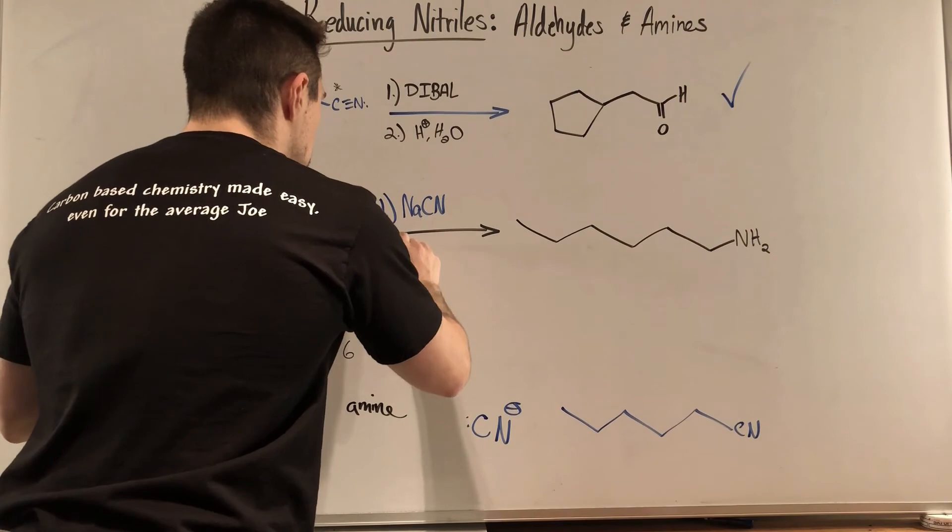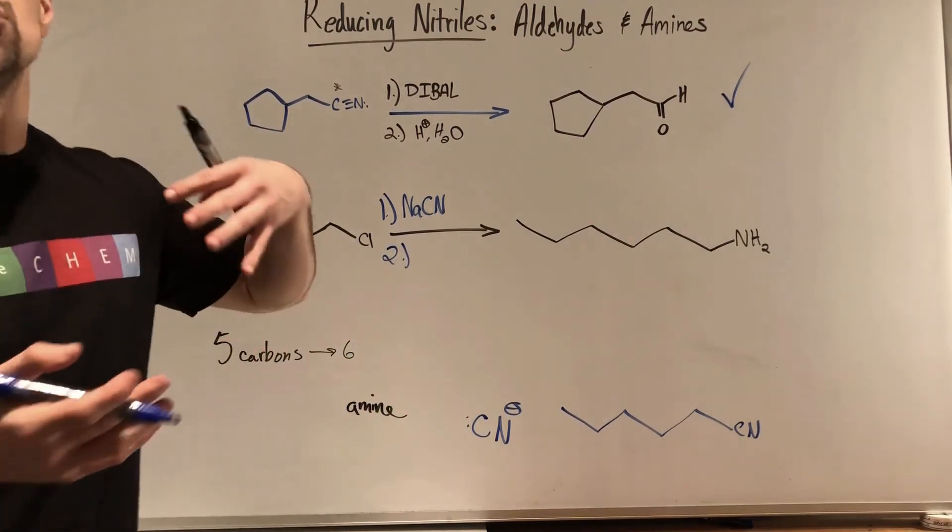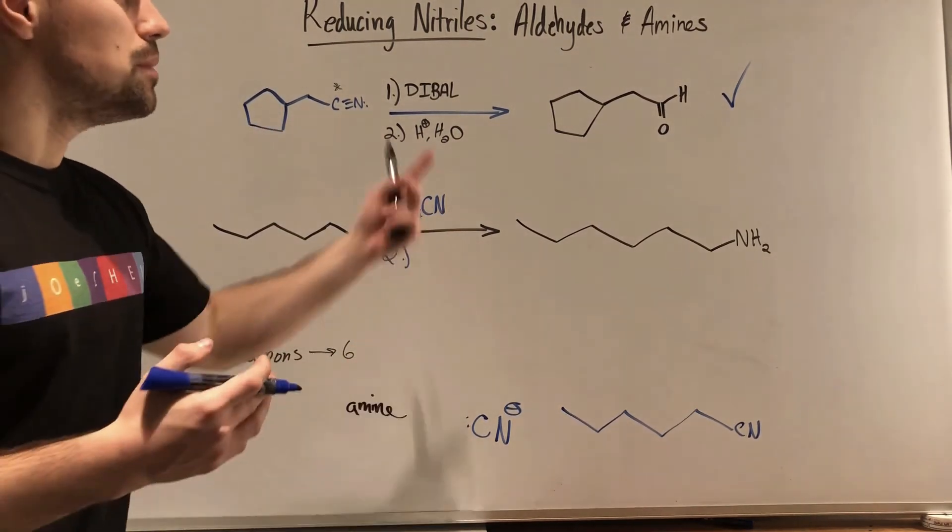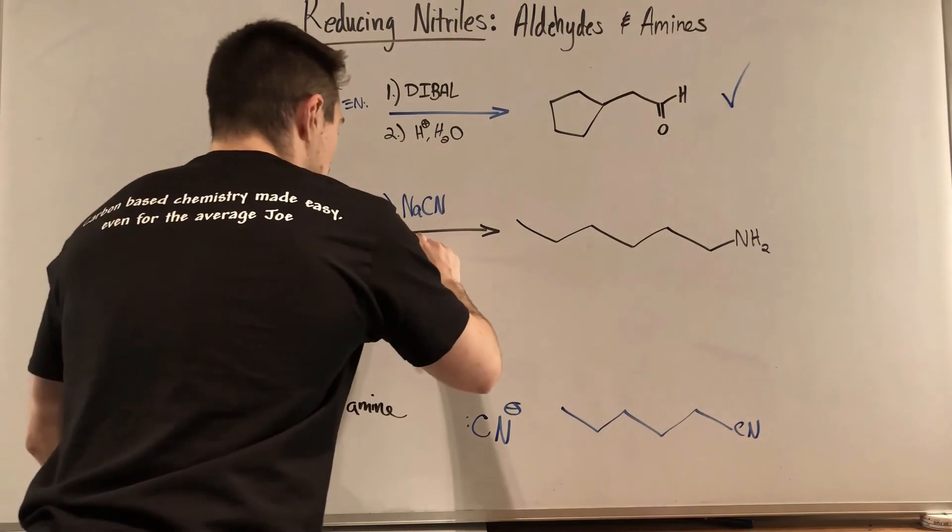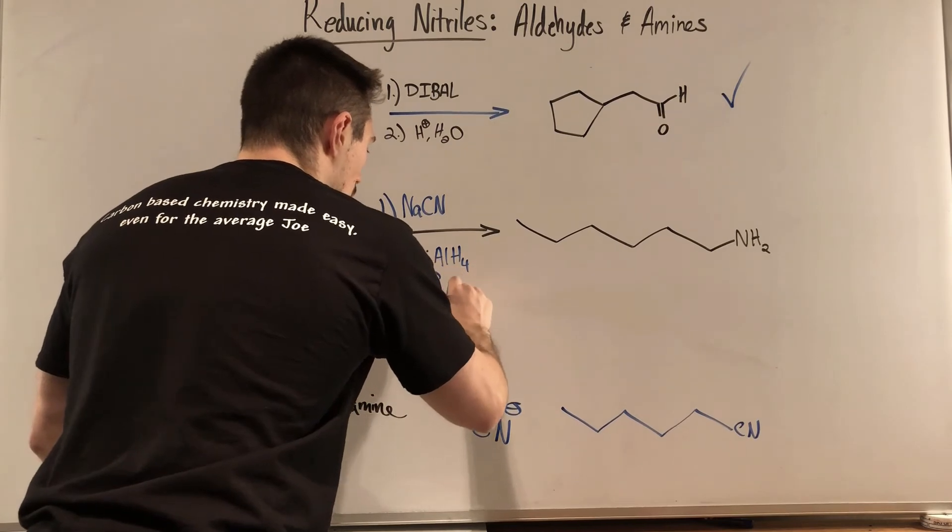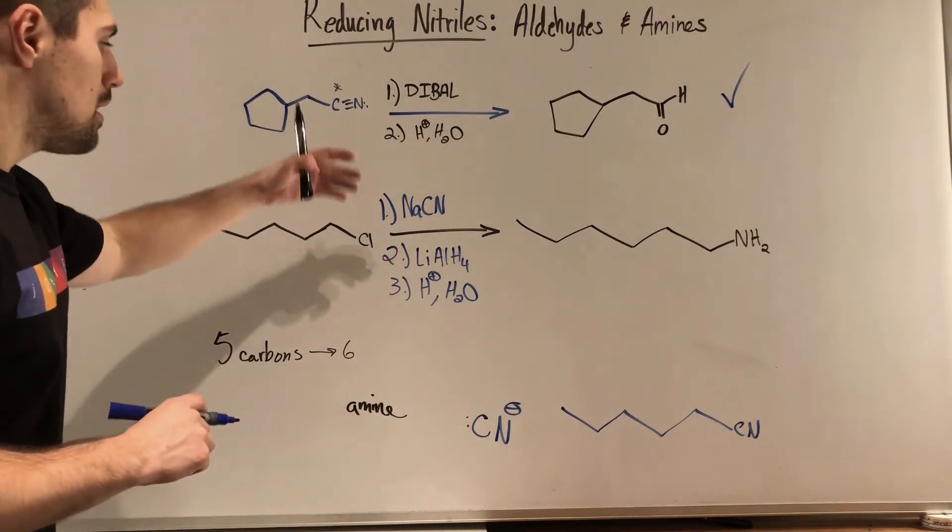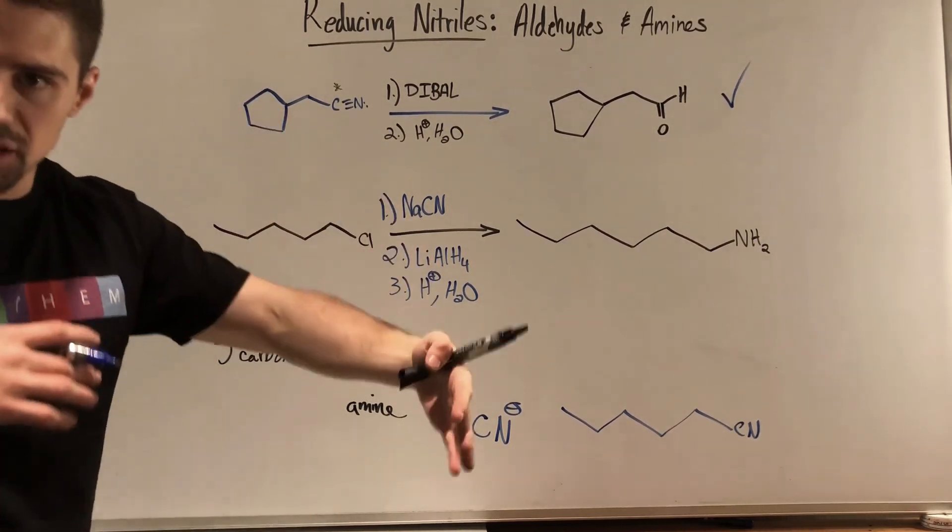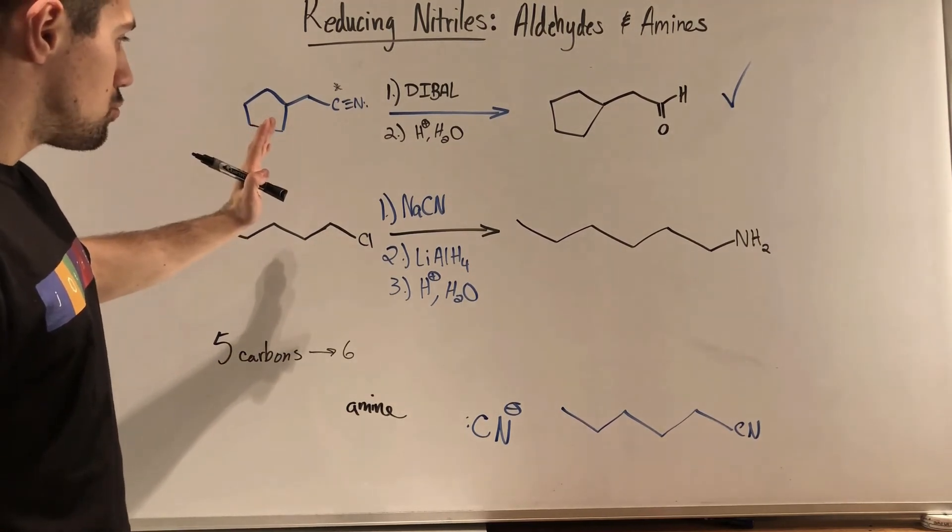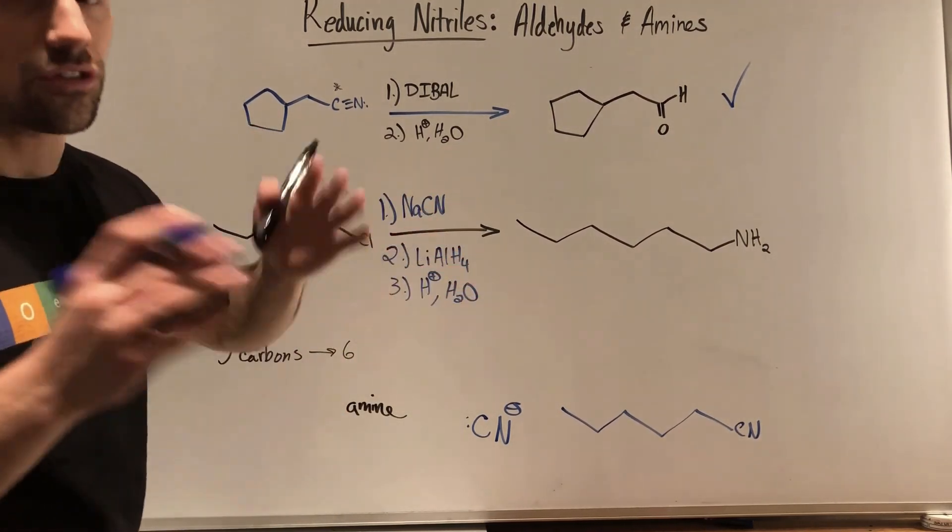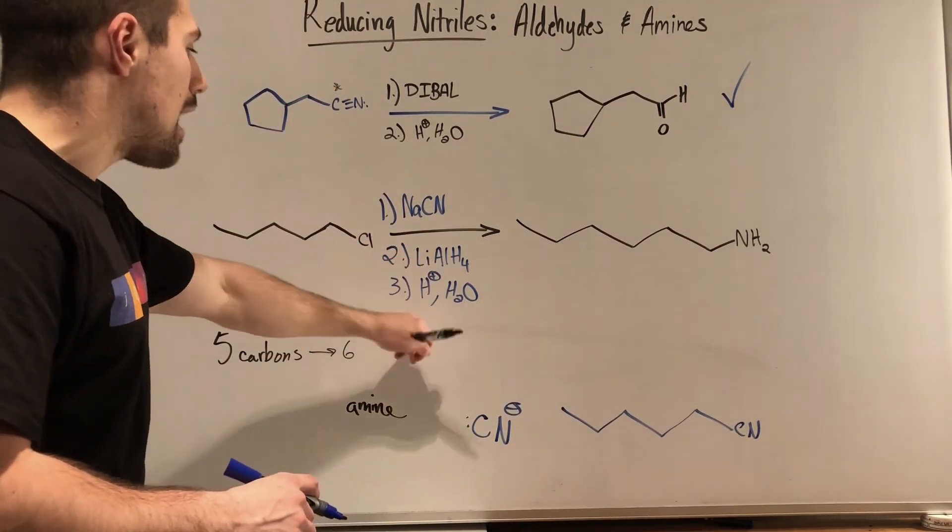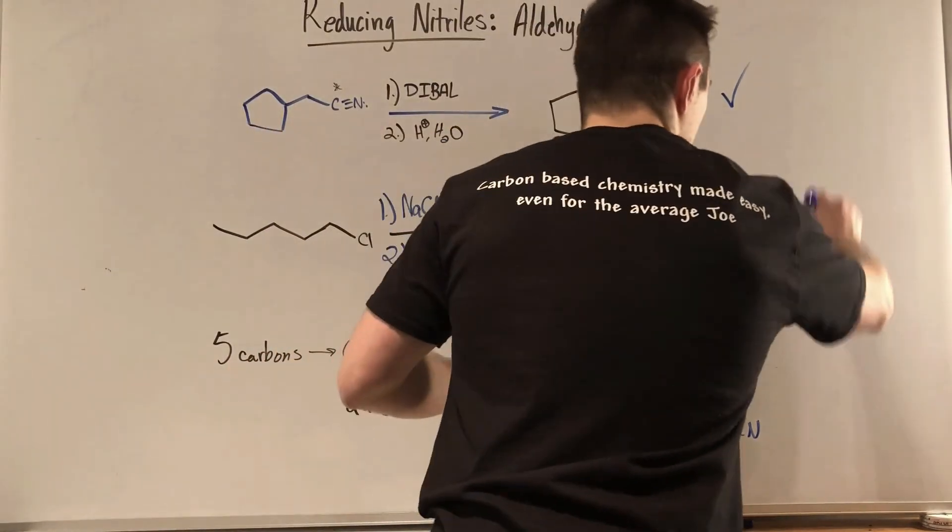At that point, that's when you can do your reduction. And in this case, maybe we would have to decide, do we need DIBAL or LAH? Do we need less aggressive or more aggressive? Because we're going to the amine, we need LAH. Lithium aluminum hydride, with a follow-up step of workup and water. So we lengthened our chain by one and then reduced it down from a nitrile. And we did that with a nitrile by doing SN2, sodium cyanide. Then we reduced the newly introduced nitrile with lithium aluminum hydride and workup. And that is how we got to our final product.